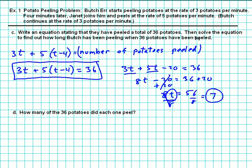All right, so what is the 7? This is how long Butch has been peeling when 36 potatoes have been peeled. So the answer here is in minutes. So this is 7 minutes after Butch started peeling.